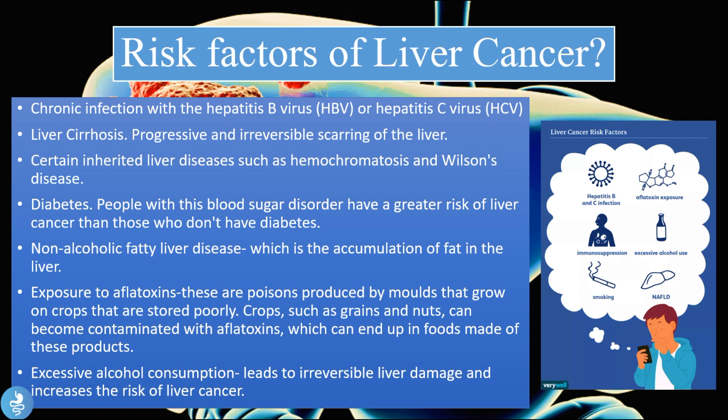There are also certain inherited diseases such as hemochromatosis and Wilson's disease. Iron overload and copper overload in the liver can lead to liver cancer because they contribute to long-standing inflammation, scarring, and then cancer in the liver.